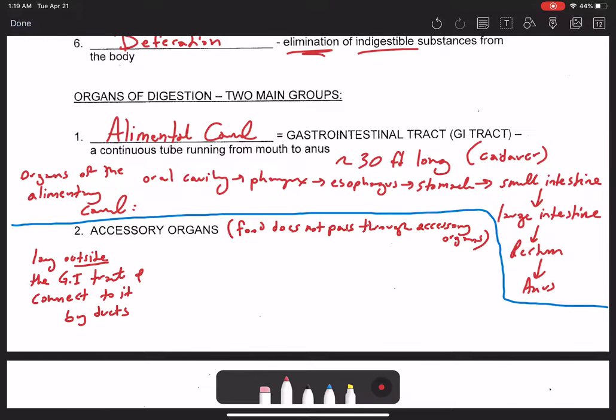So these organs include the liver, gallbladder. By the way, the word gall means bile, so the word gallbladder literally translates to the bile bladder. Whenever you see the word bladder, you know the organ is used for storing some type of fluid. In this case, it's for the storage of bile. That's why we call it the gallbladder. The pancreas and salivary glands.